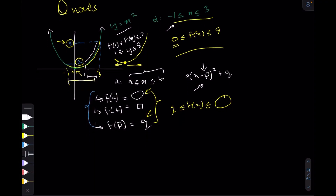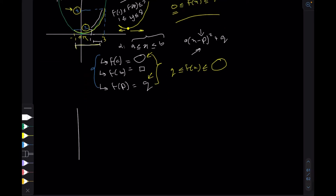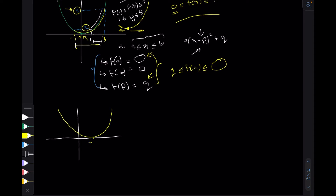This part is about the domain and ranges of quadratics. A lot of the times they give you some quadratic and they don't tell you the domain. Let's take a proper one - this is three comma zero and this is your quadratic. If you were to expand this it would turn out to be this thing. They've given you this quadratic and told you that the domain is such that the x value is greater than or equal to a.